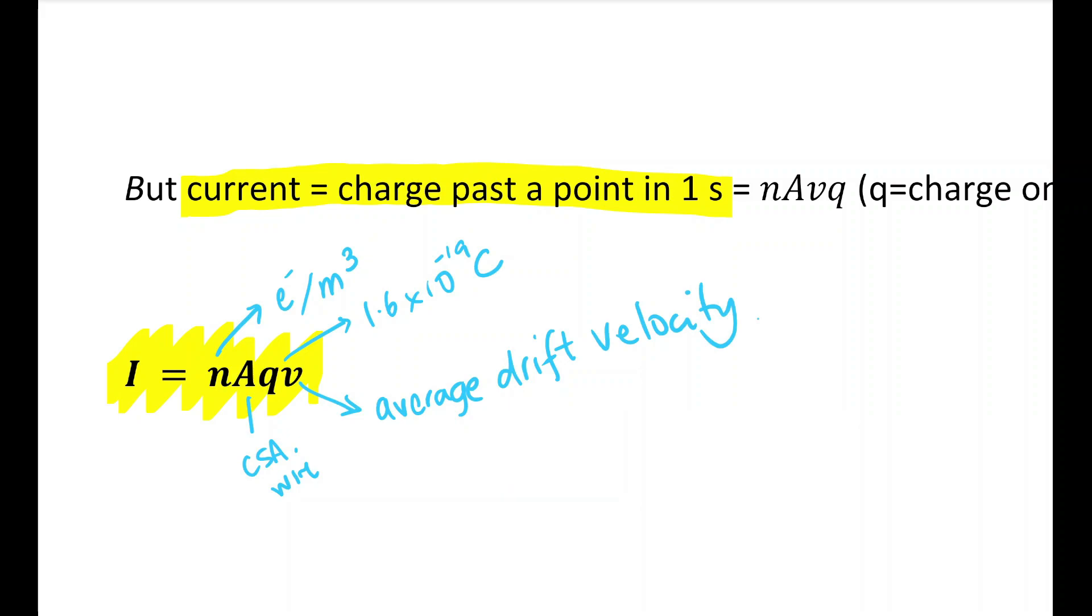What this does tell us is something more about current. We know that we can increase the current if we get the charge to go faster, if they've got an average drift velocity increase. But what this also tells us is that we can get the current to go faster if we just have more electrons available in the wire, if you use a material that has a higher charge carrier density. So both of these things will influence the speed of the electrons through a particular wire.